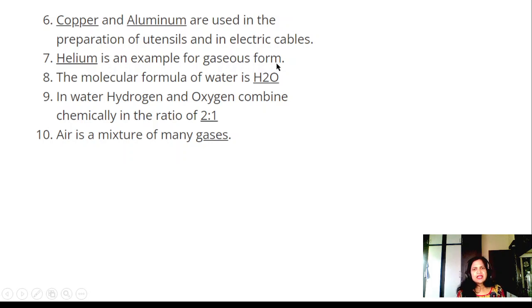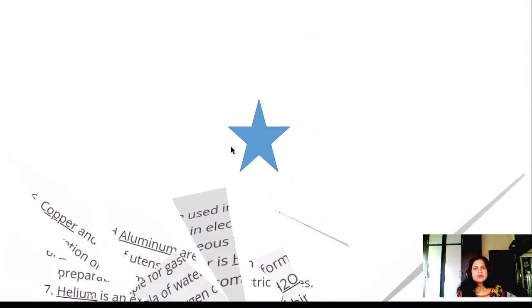Helium is an example of gaseous form. The molecular formula of water is H2O. In water, hydrogen and oxygen combine chemically in the ratio 2:1. Air is a mixture of many gases.